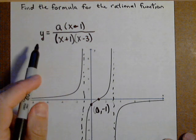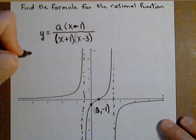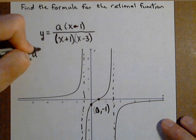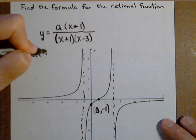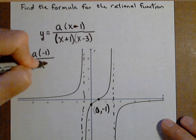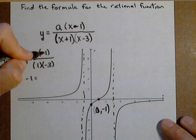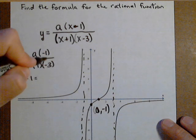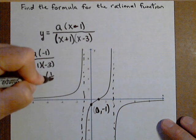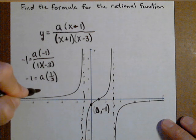Because we know that when x is zero, the y value has to be -1. So let's solve for that. We're going to set y to -1, and all our x's to zero. So a times (0-1) is a(-1). Over (0+1) is 1, and (0-3) is -3. So we get -1 = a(-1)/(-3), or a times 1/3. Multiplying both sides by 3, we get a = -3.